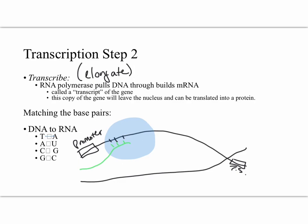Let's review those rules. If DNA has a T, RNA will use an A. If DNA has an A, RNA will use a U. If DNA has a C, RNA will have a G. And if DNA has a G, RNA will have a C.